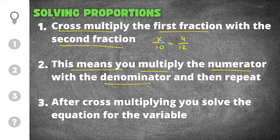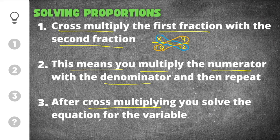In our example we would take the numerator of the first fraction and multiply it times the denominator of the second fraction, and then we would take the denominator of the first fraction and multiply it with the numerator of the second fraction. This is what's referred to as cross multiplication. After doing cross multiplication, you will solve the equation for the variable. After you cross multiply you'll get a simple equation, and then you'll have to solve for the variable x.